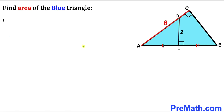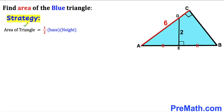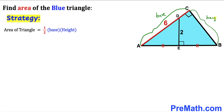Let's get started. Since we are interested in calculating the area of this blue triangle ABC, let's recall the area of a triangle formula: area equals one half times base times height. In our case, side AC is our base and BC is our height, so our task is to calculate this side length BC.